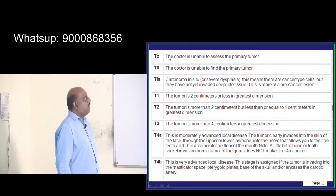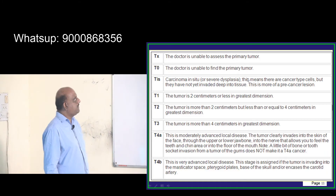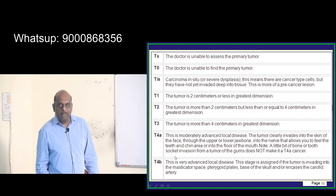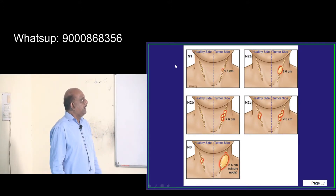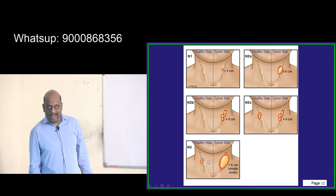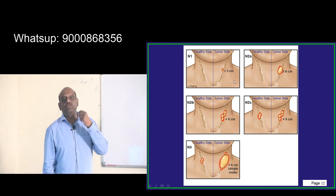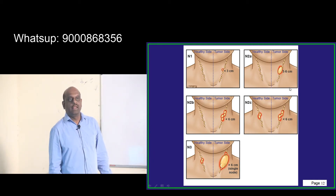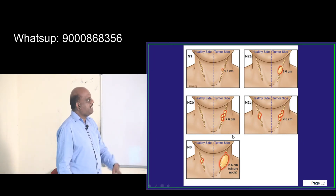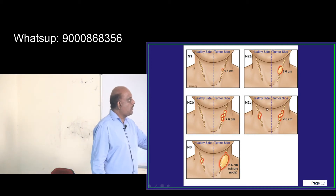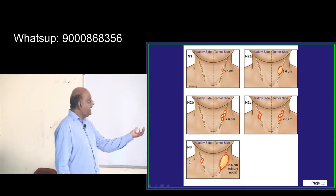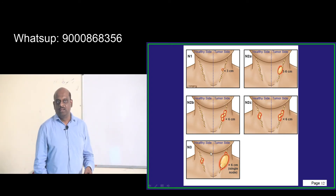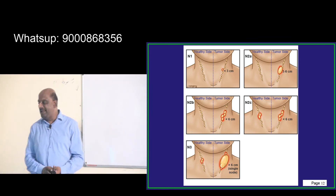TX means the doctor is unable to assess the primary tumor; T0 means unable to find the primary tumor; then TIS, T1, T2, T3, T4A, and T4B, where T4B is very locally advanced. For nodal staging: N1 is a lymph node less than 3 centimeters; N2A is 3 to 6 centimeters ipsilaterally; N2B is multiple ipsilateral nodes less than 6 centimeters; N2C is bilateral or contralateral nodes less than 6 centimeters; N3 is more than 6 centimeters, or contralateral palpable lymph node.